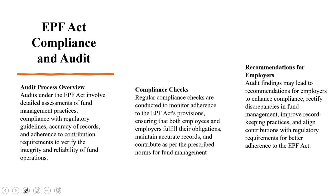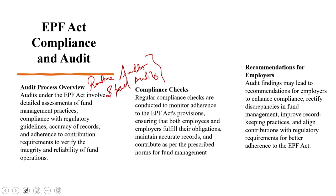When looking at EPF compliance and audit, the EPFO conducts audits of establishments covered under the EPF Act to safeguard employee interest and uphold the Act's integrity. There are routine audits and special audits. Routine audits are regular inspections conducted by regional EPFO offices that assess adherence to core compliance areas. Common areas of scrutiny include timely deductions from employee salaries, deposits into employee accounts, meticulous record keeping, and filing of returns within stipulated deadlines.